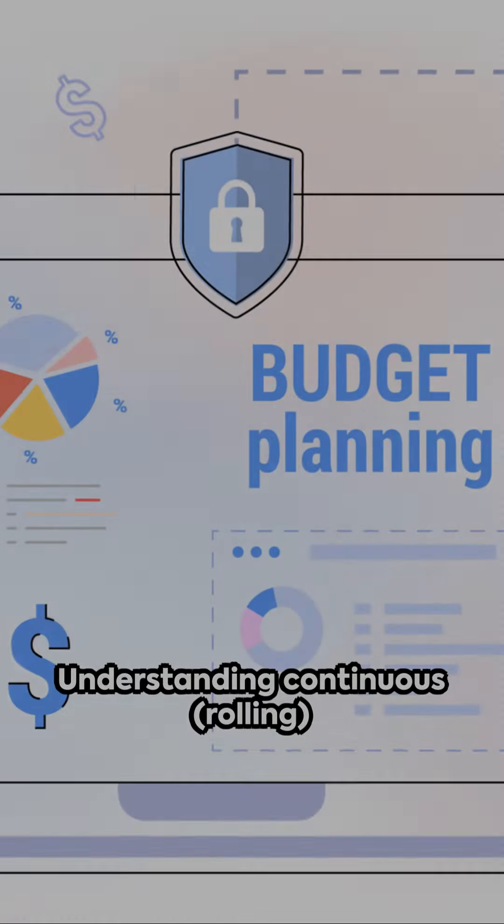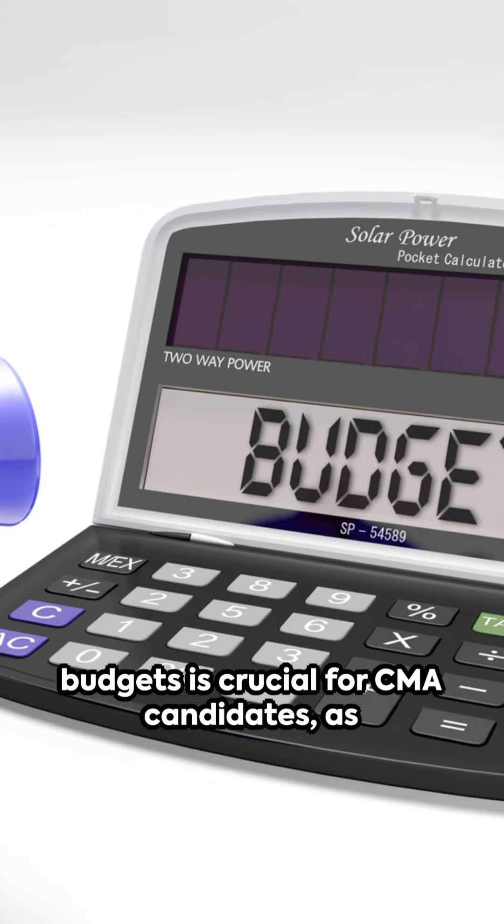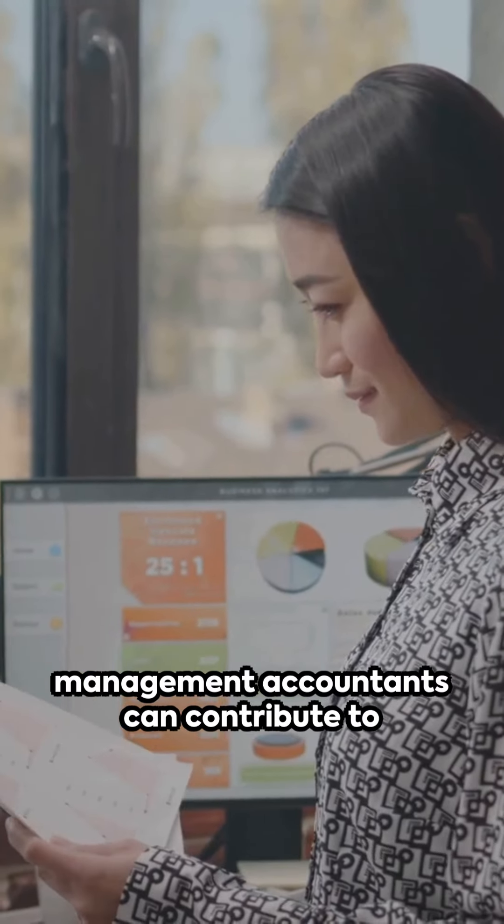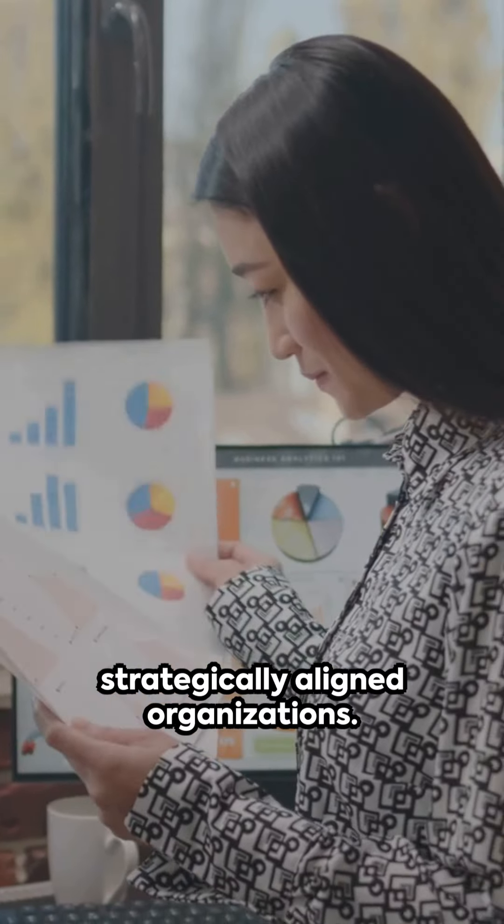Understanding continuous rolling budgets is crucial for CMA candidates, as it equips them with the knowledge to manage and adapt to the complexities of modern financial planning and control. By embracing this approach, future management accountants can contribute to building more agile, responsive, and strategically aligned organizations.